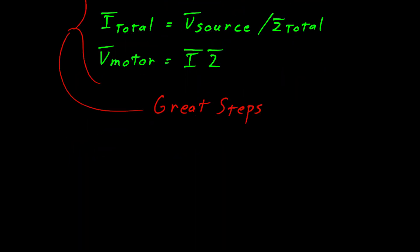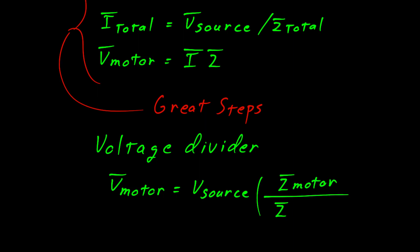I should mention that there is another way to solve this problem, and that is using the voltage divider. Symbolically, we can say that the motor voltage is equal to the source voltage multiplied by the impedance of the motor over the total impedance.